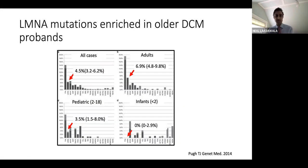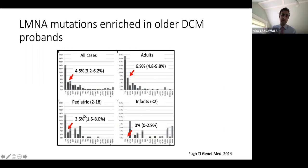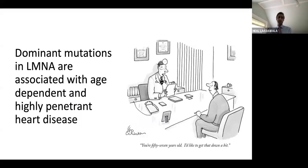When we looked more carefully to separate adults from children, we found that specifically in the adult DCM population, about 7% will have a lamin mutation, whereas it's essentially non-existent in infants and pretty uncommon in pediatric populations. Like other genetic causes of dilated cardiomyopathy, lamin mutations are dominant and associated with age-dependent penetrance. Unlike other causes, penetrance is very high — approaching 100% in most studies.